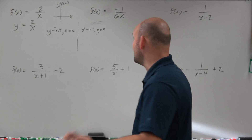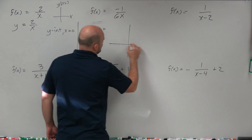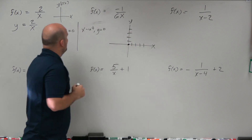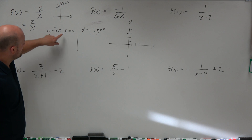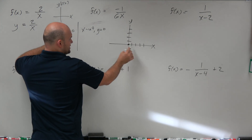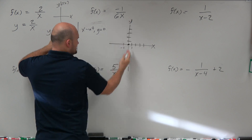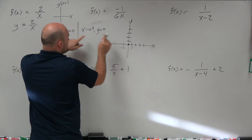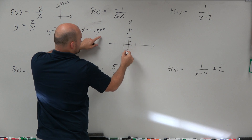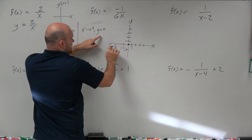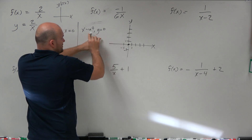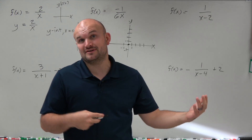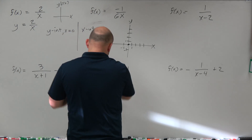Set y equals 0 and solve for x. The reason why this works: here's your x-axis and here's your y-axis. When x is equal to 0, that means you're on the y-axis — whatever value of y is when x is 0, that's the y-intercept. When y is equal to 0, that means you're on the x-axis — whatever value of x is when y equals 0 is going to be the x-intercept. So algebraically, we just replace x and y with 0.